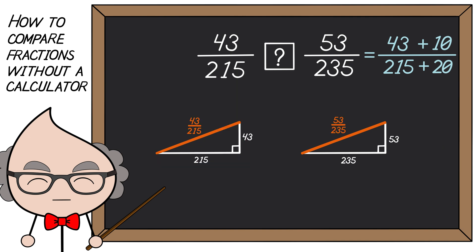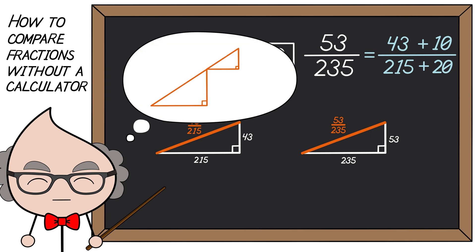If you don't get it yet, that's because you now have to visualize the second fraction as two right triangles joined at their tips rather than one.